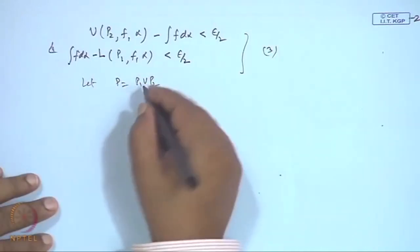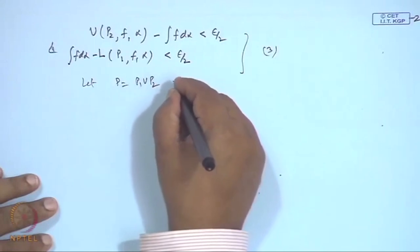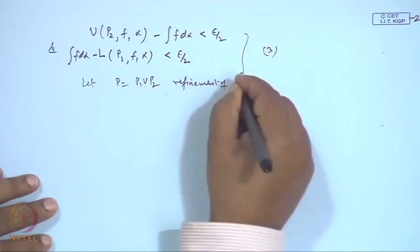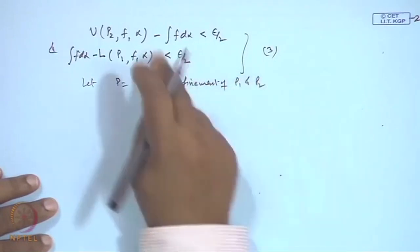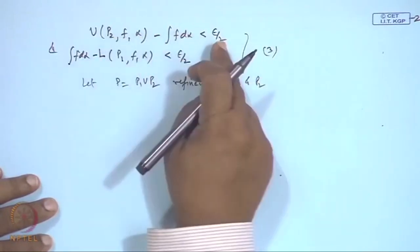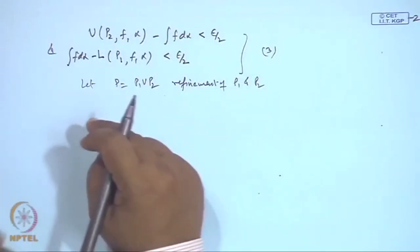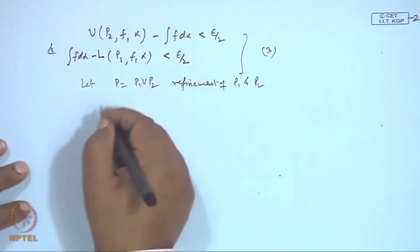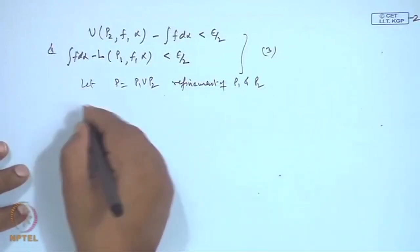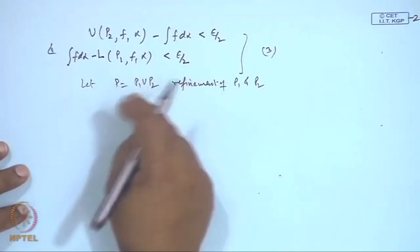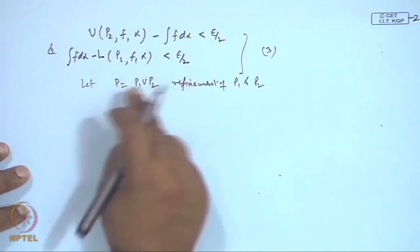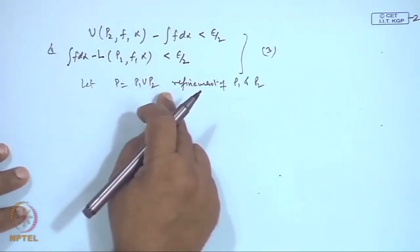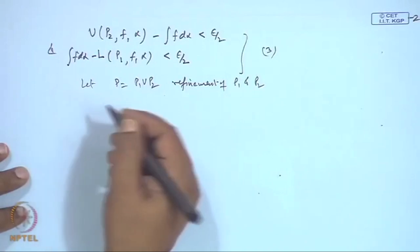Let P = P₁ ∪ P₂ be the common refinement of P₁ and P₂. When P* is a refinement of P, upper sum decreases and lower sum increases. Since P is the refinement of P₁ and P₂, U(P,f,α) ≤ U(P₂,f,α). Using equation 3, this is less than ∫f dα + ε/2.